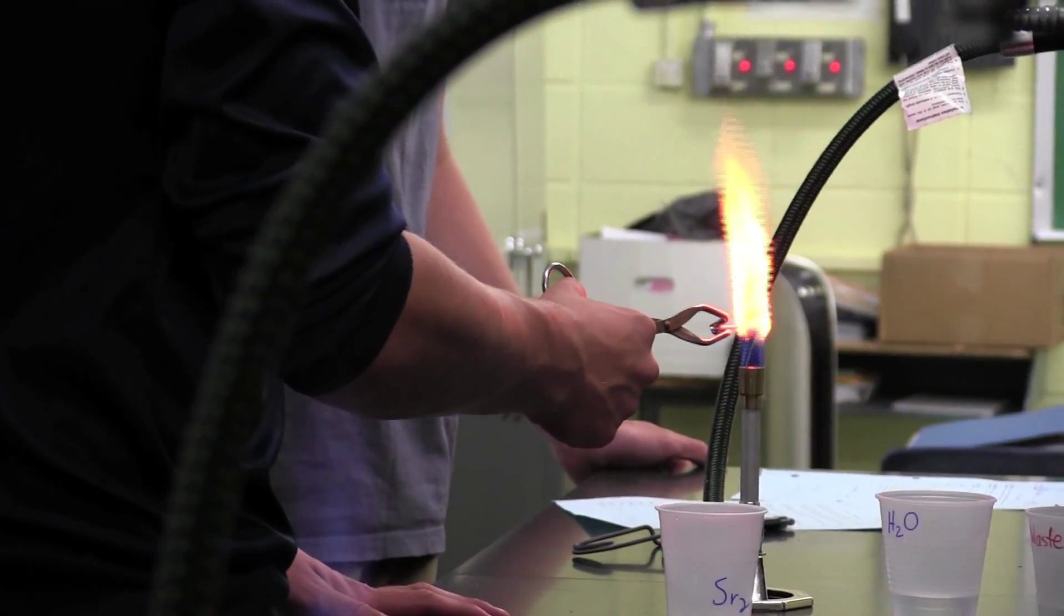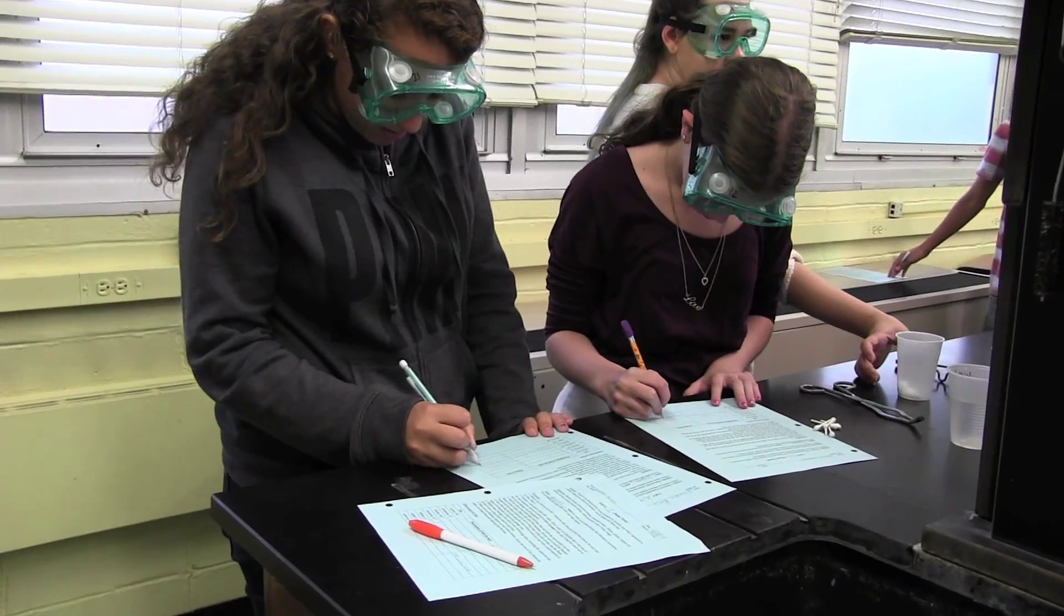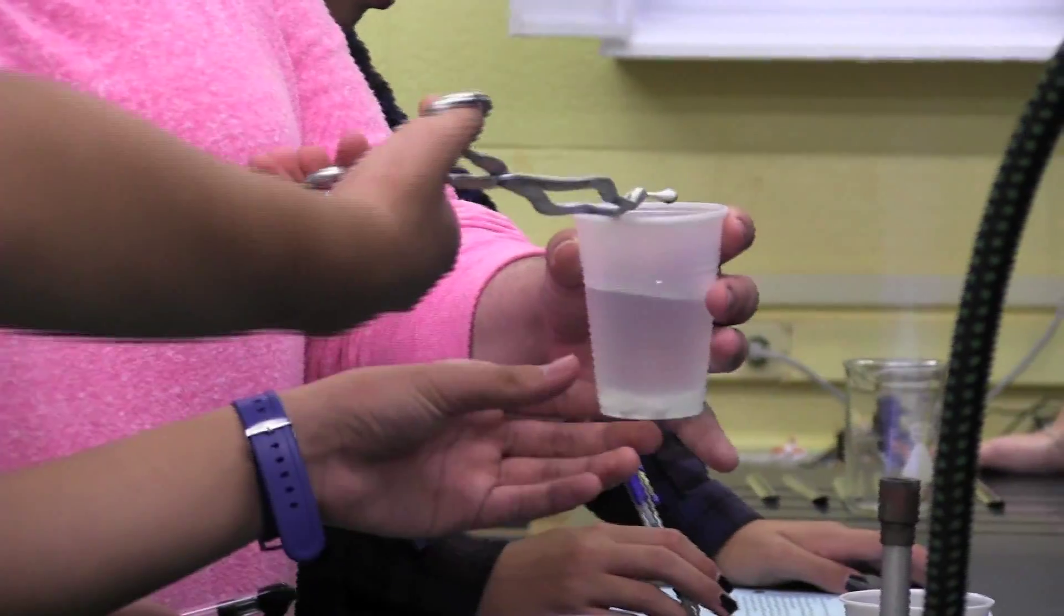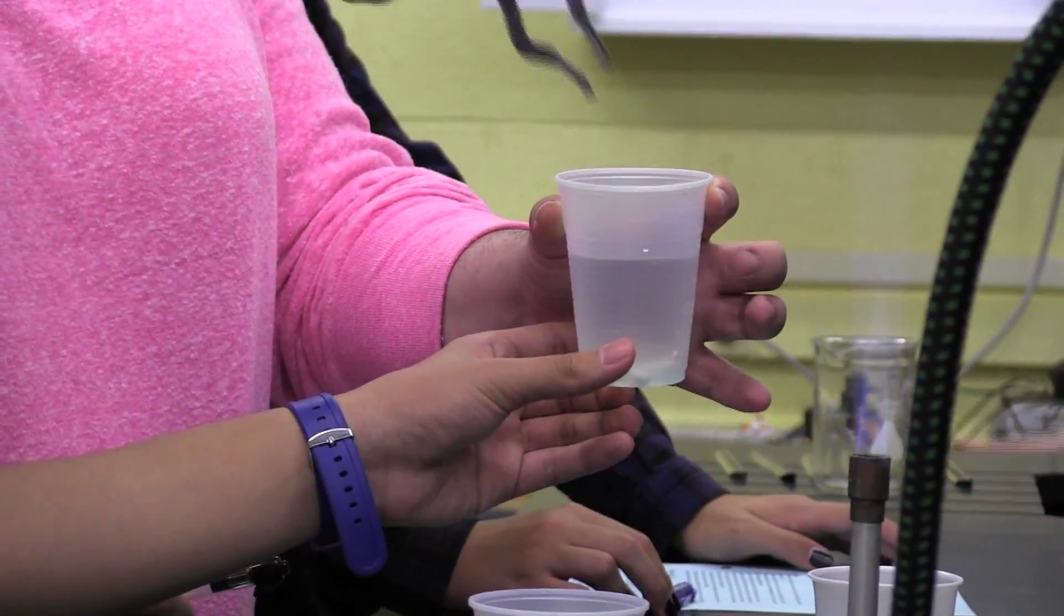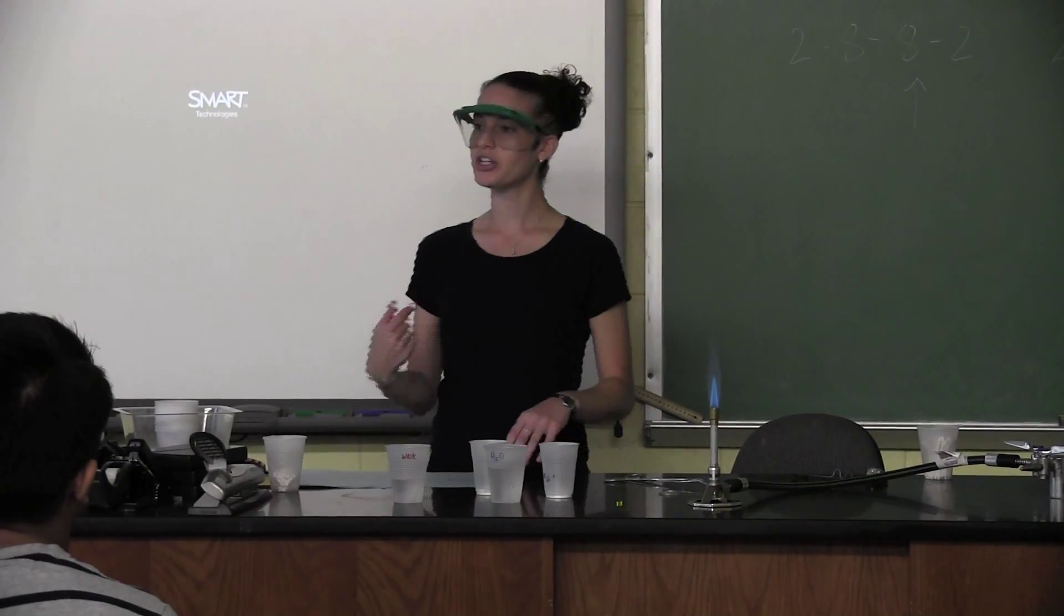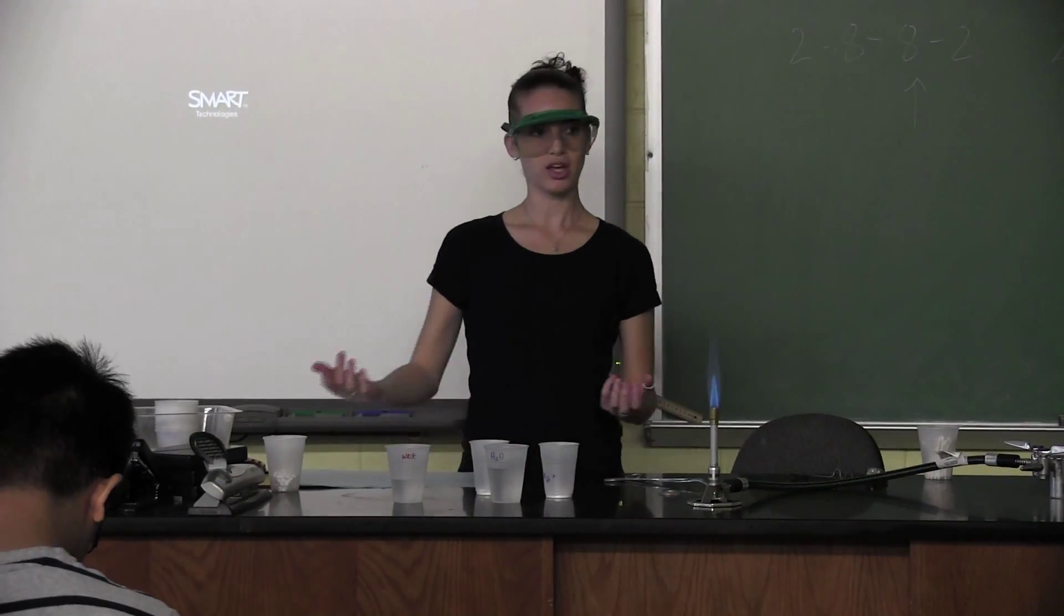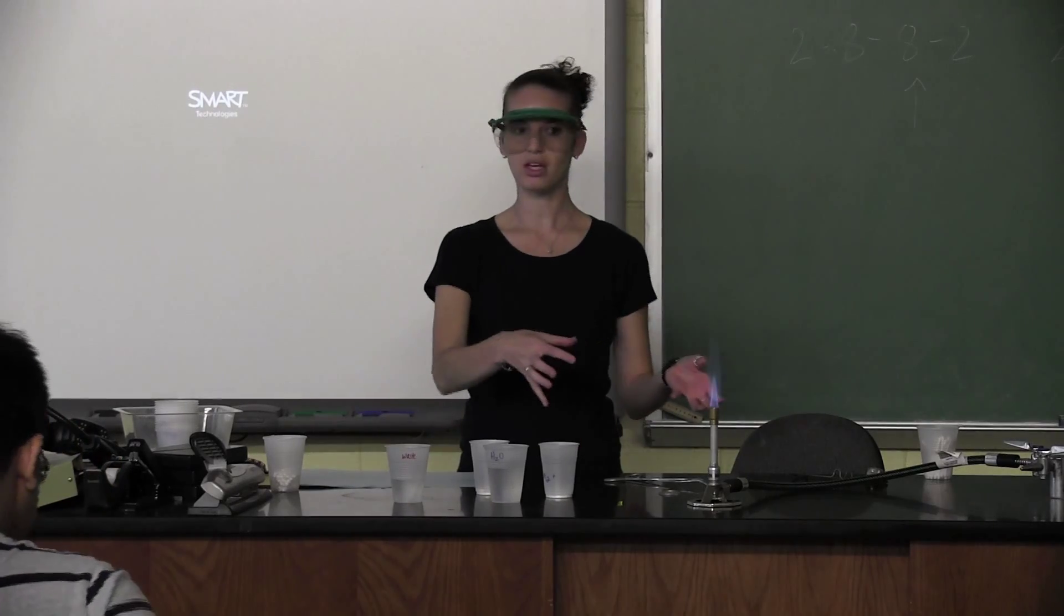But you can try it out a few times when you're finished. You're going to record what you see. And then you have a waste cup also with some water in it. Just drop the Q-tips in there. There are six different salts you have to test and one unknown. So everyone should get at least two chances to put something in the flame.